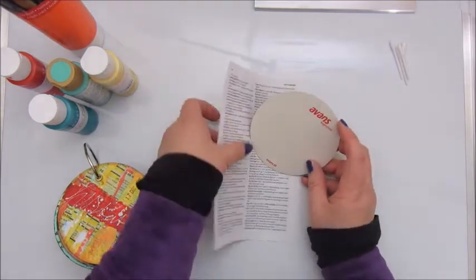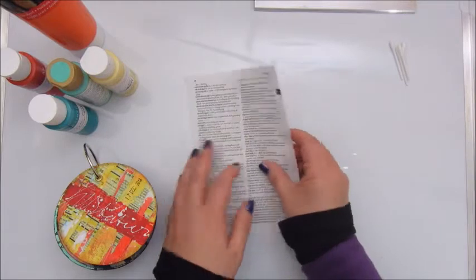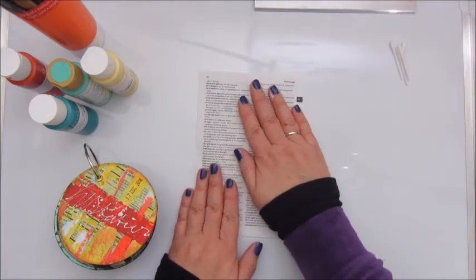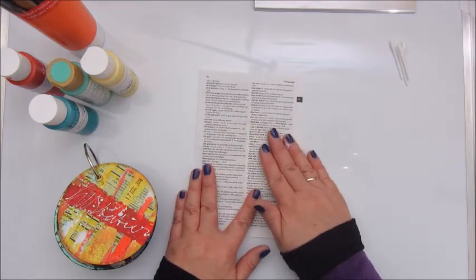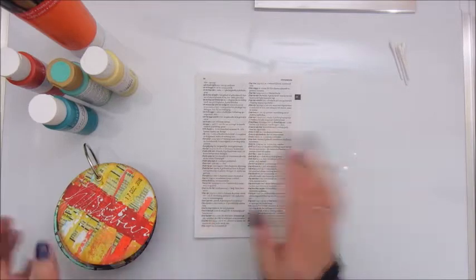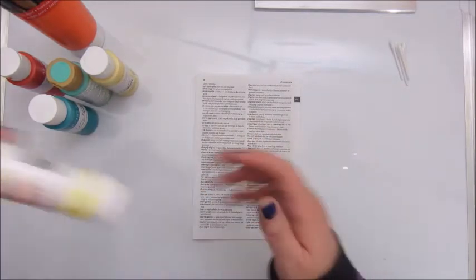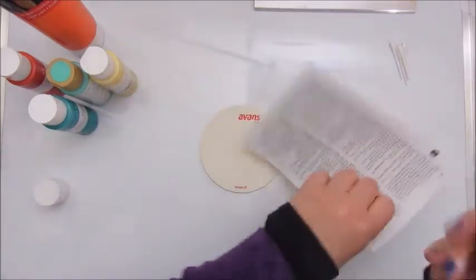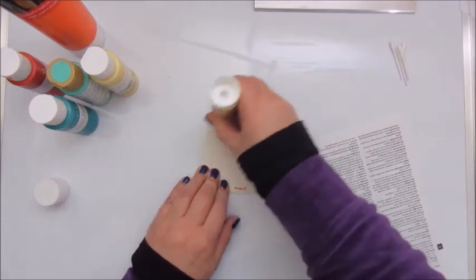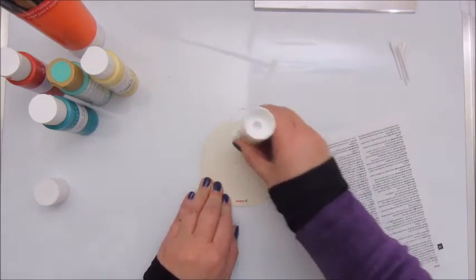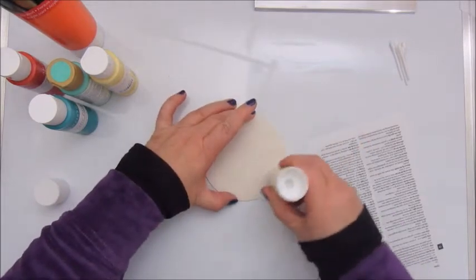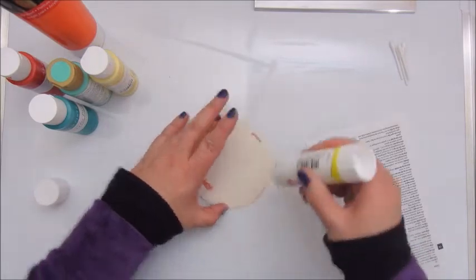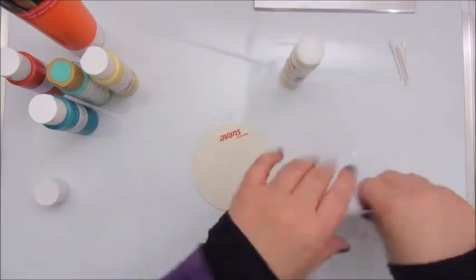First I'm going to do something with the background and I'm gluing down this piece of dictionary paper, book text and I will probably do a bit of gesso on that and maybe some stamping. So let's start using my glue stick to glue this down.